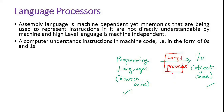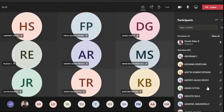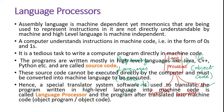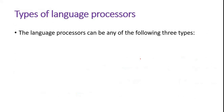This language processor can be a compiler, it can be an assembler, or it can be an interpreter. We will discuss each one. So the three types of language processor are: compiler, assembler, and interpreter.